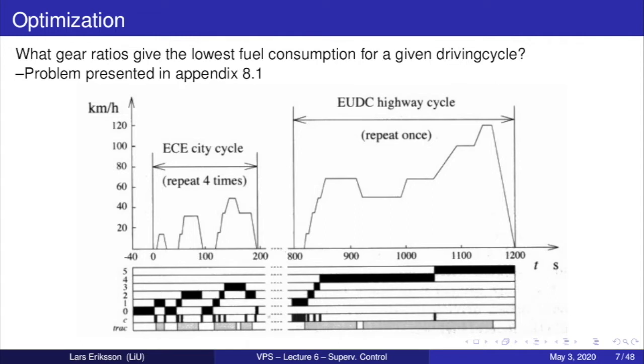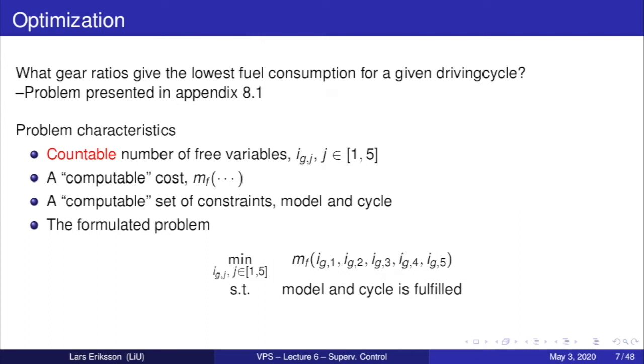We are also utilizing optimization in the process of improving the fuel economy of vehicles. You've seen already one example where we looked at the gear ratio optimization to see how we can adjust the gear ratios to get the lowest fuel consumption over a given drive cycle. That problem is presented in appendix 8.1. The problem characteristics in normal optimization is that we have a countable number of free variables. The free variables in this case are five, but you could also have several hundreds of thousands of free variables in optimization problems. We have a cost function which we can compute, a set of constraints which we can evaluate to see if it fulfills our desired properties. We formulate the problem to minimize the total fuel as a function of the five decision variables, and we need to make sure that the model and the cycle is fulfilled.